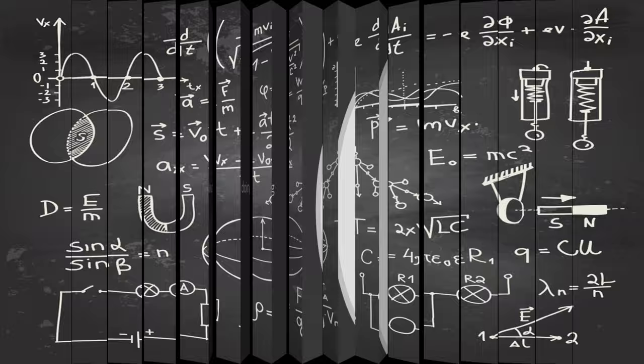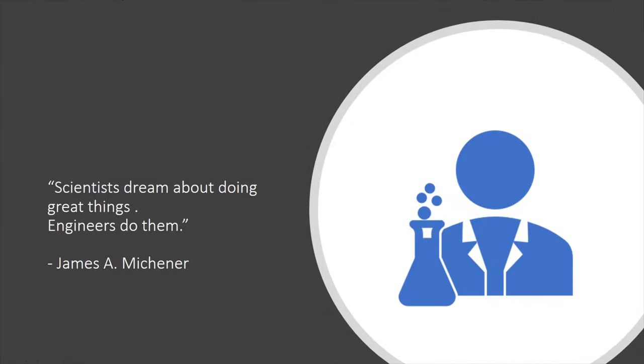As the novelist James A. Michener put it in his novel Space, scientists dream about doing great things. Engineers do them.